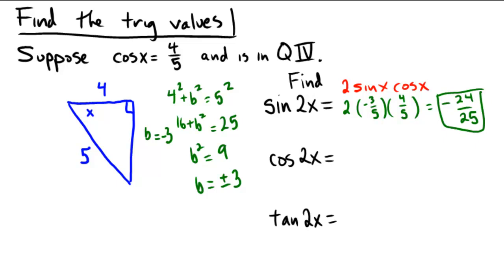The cosine of 2x is equal to cosine squared x minus sine squared x. So in this context, it's going to be the cosine, which we know is 4 fifths, that's being squared.